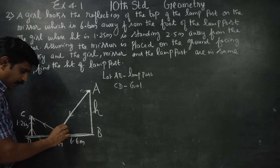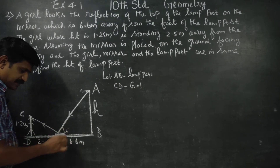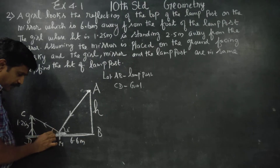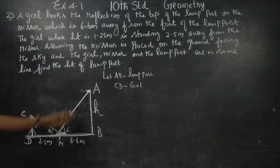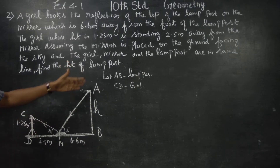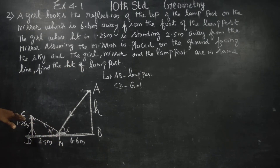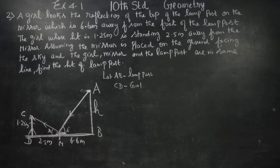Angle of incidence and angle of reflection. The rule is: angle of incidence equals angle of reflection. That is, I is equal to R.